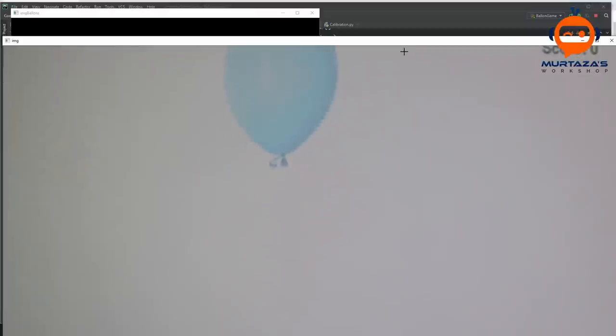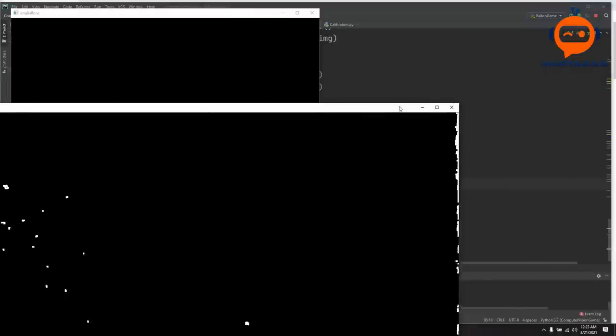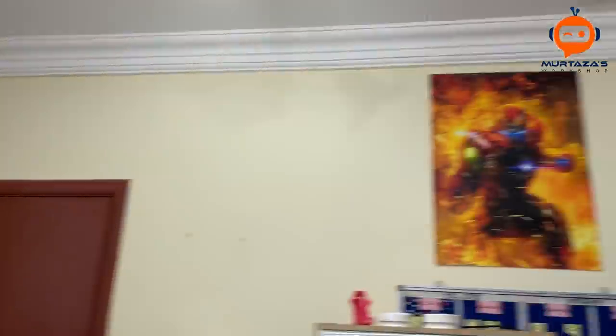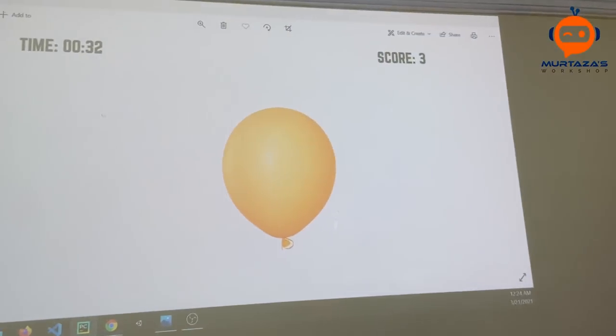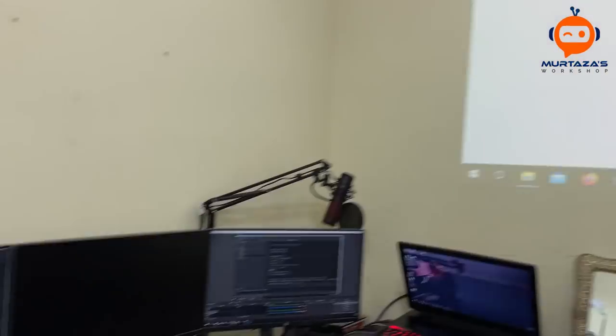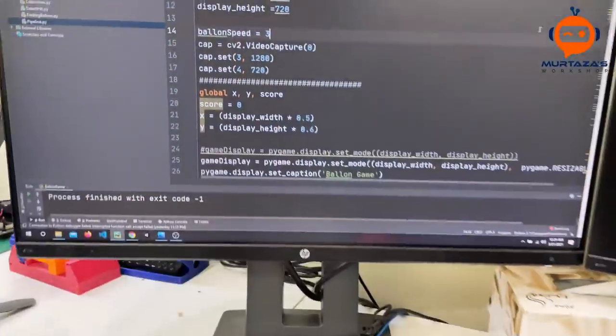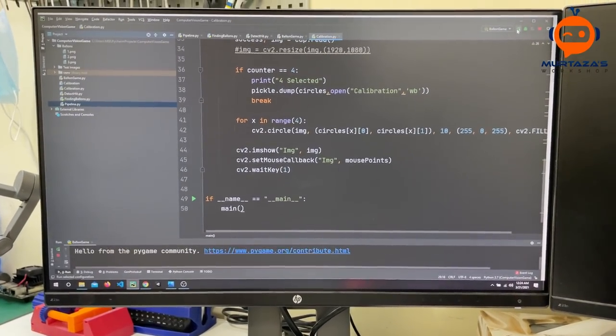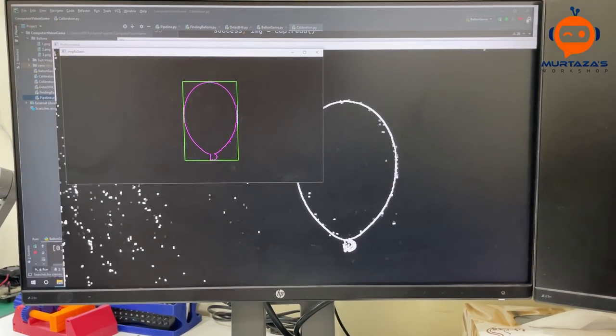With the game ready and the image processing working, I took my phone and recorded the testing footage. So now I have finished with the coding and I haven't tested yet. Here is the projector projecting right on the wall, and we have our code over here. So the first thing is to calibrate.